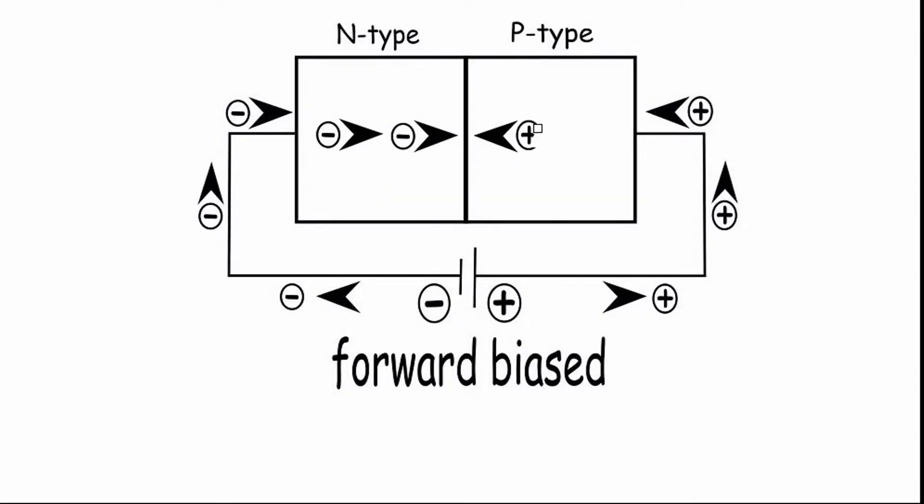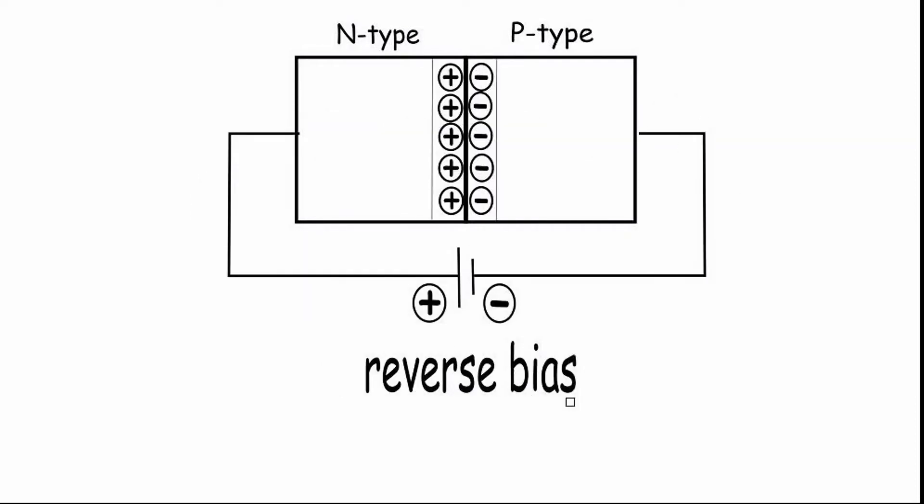Hence, large number of electrons and holes will cross the junction and make the current flow from anode to cathode.